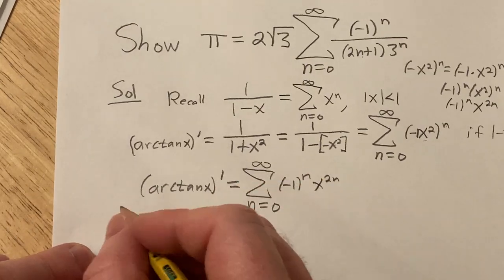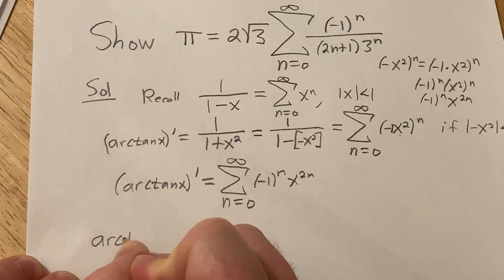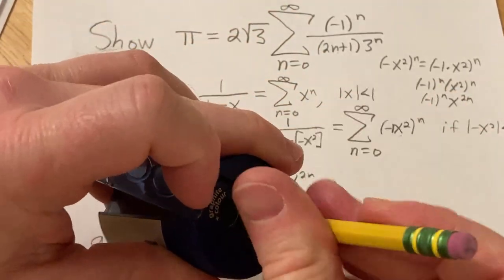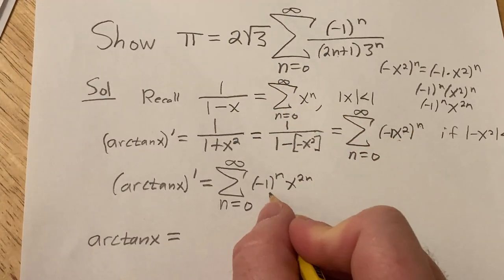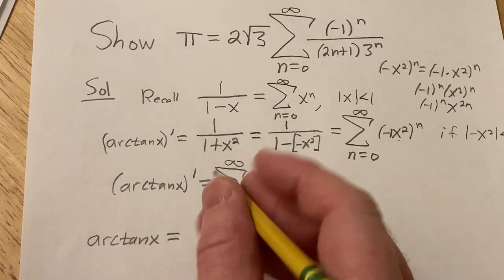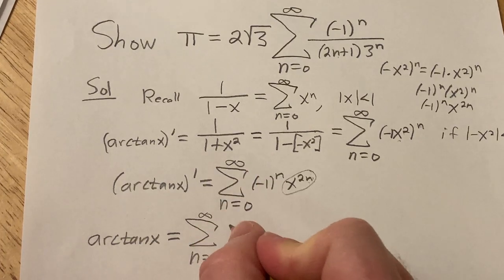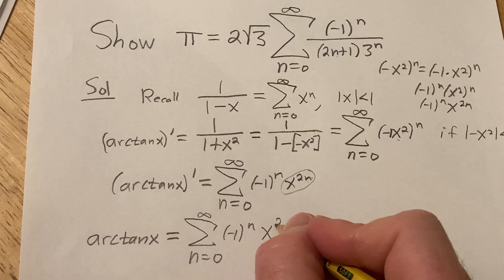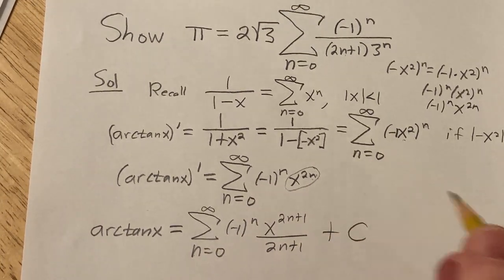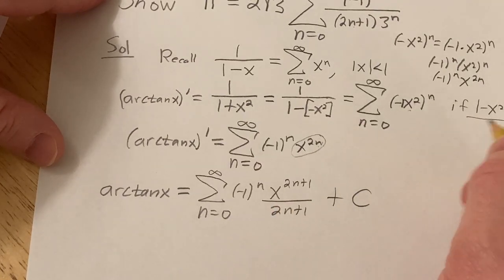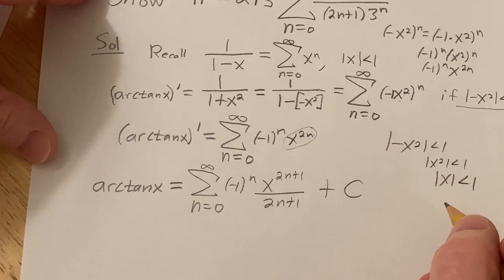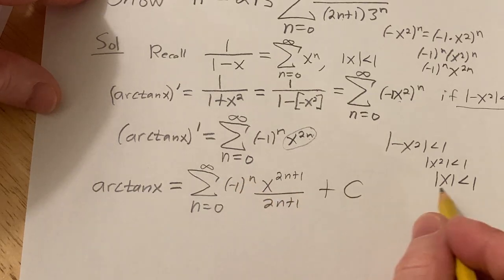Now we're going to integrate both sides of this. When we do that, we get arc tangent on the left-hand side. Here, when we integrate, we ignore the negative 1 to the n — it's like a constant. So integrating with respect to x using the power rule on this piece, we get the infinite sum as n runs from 0 to infinity of negative 1 to the n times x to the (2n plus 1) over (2n plus 1), plus a constant of integration C. We need to get rid of this C, so I'll plug in x equals 0.